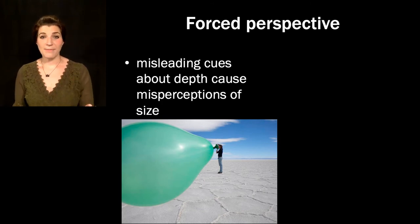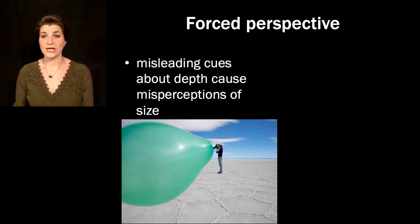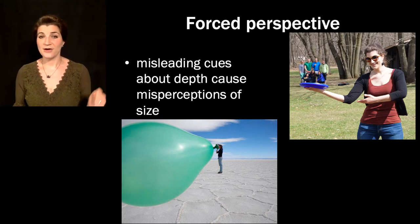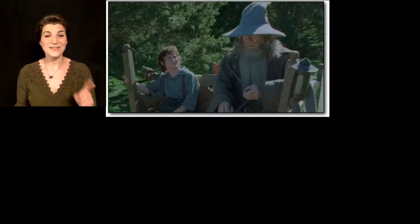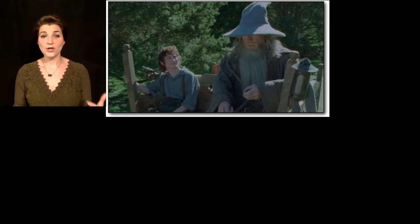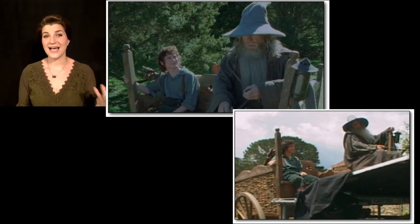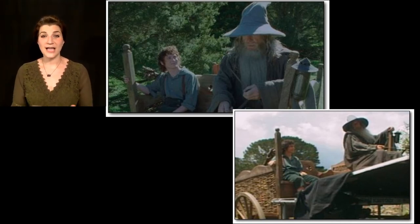Illusions can also reveal our assumptions about size and depth through forced perspective stimuli. Giving misleading cues about depth causes misperceptions about size. Seeing a person make physical contact with a balloon leads you to believe they must be in the same visual plane, so the balloon must be huge. In Lord of the Rings, Frodo looks very small next to Gandalf because the bench is constructed so that Frodo is about two feet behind Gandalf—he makes a smaller proximal stimulus because he's far away, not because he's hobbit-sized.